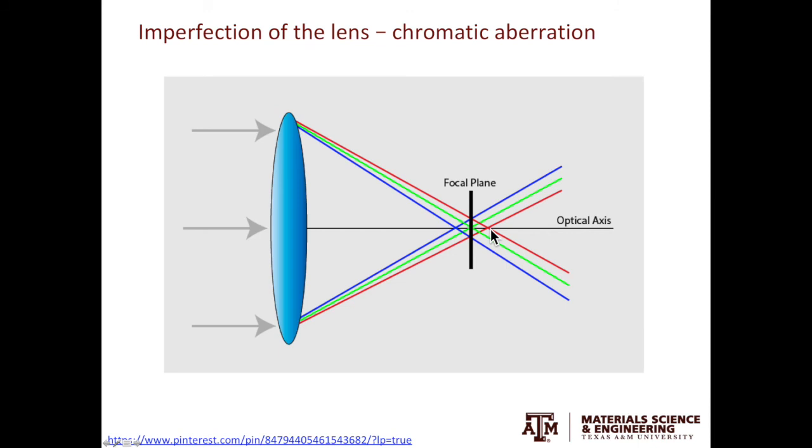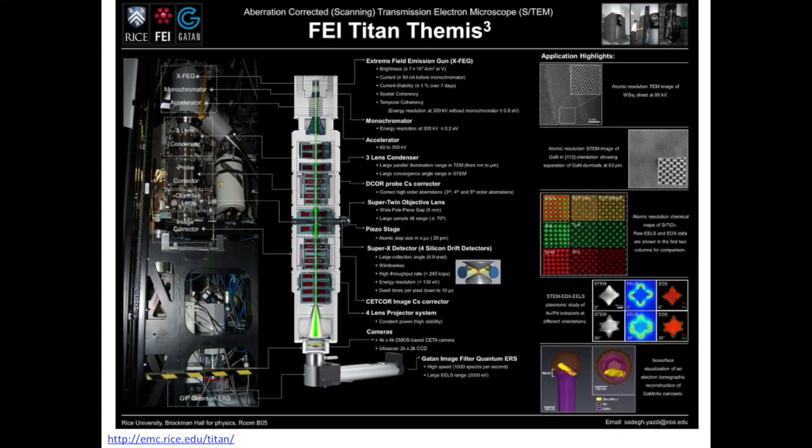To correct the spherical aberration and chromatic aberration in TEM is very expensive. I took this poster from Rice University. Rice has a FEI Titan Themis Z TEM. The TEM is equipped with a monochromator and two aberration correctors. The monochromator sits in the electron source to reduce the energy spread of the electron beam.